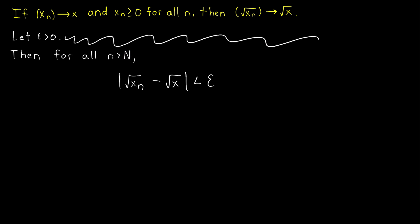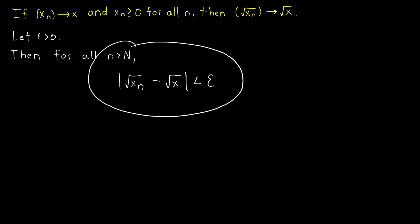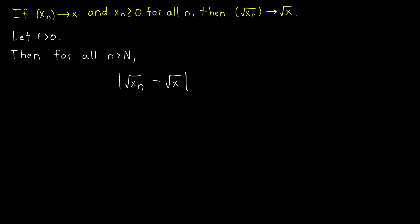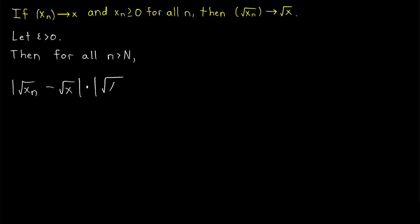We'll have to find the big N value that makes this work. Before we try to make this expression less than epsilon, there's something important to note. When we have two numbers being added or subtracted and we'd rather work with the squares of those numbers, we want to think about conjugates. Let's multiply this expression by its conjugate, which is the absolute value of the square root of xn plus the square root of x — we just flip the sign in the middle. In a previous lesson, we proved that the product of absolute values is the absolute value of the product, so we can bring this multiplication into one pair of absolute value bars: the absolute value of the square root of xn minus the square root of x, multiplied by its conjugate, square root of xn plus the square root of x.